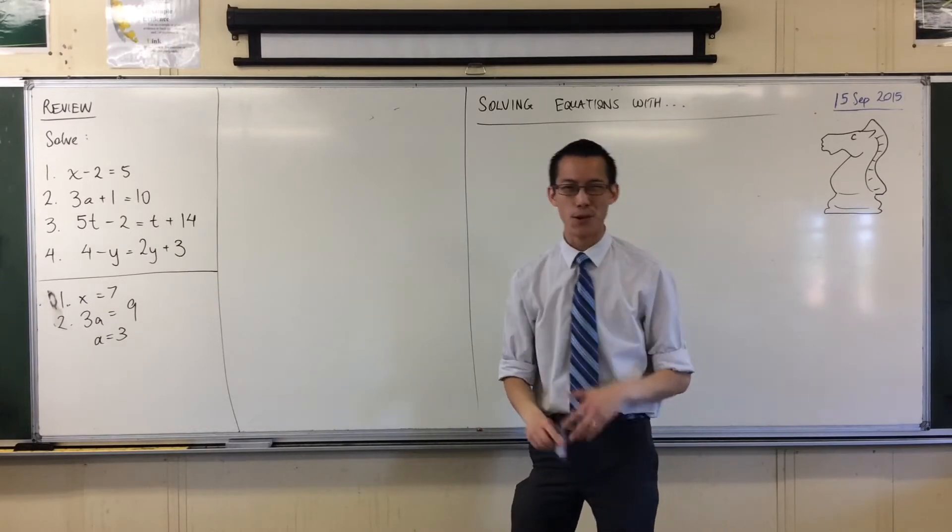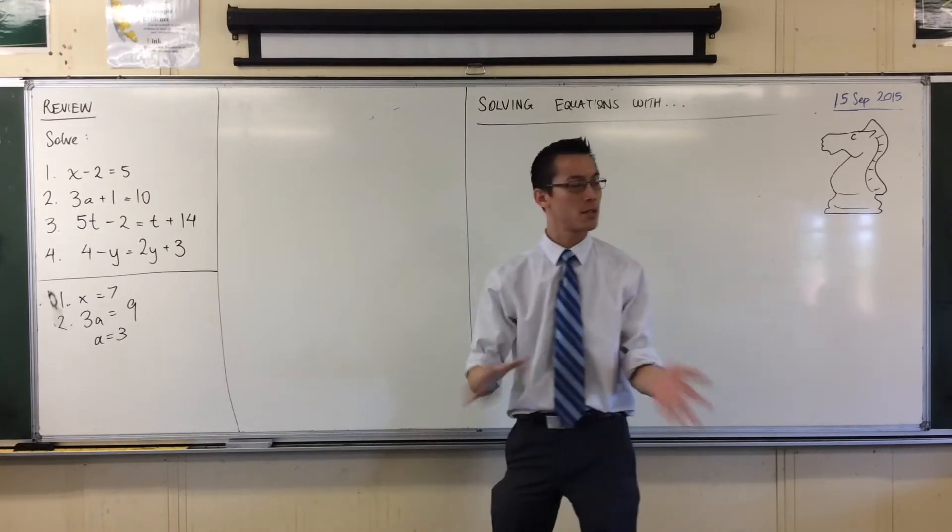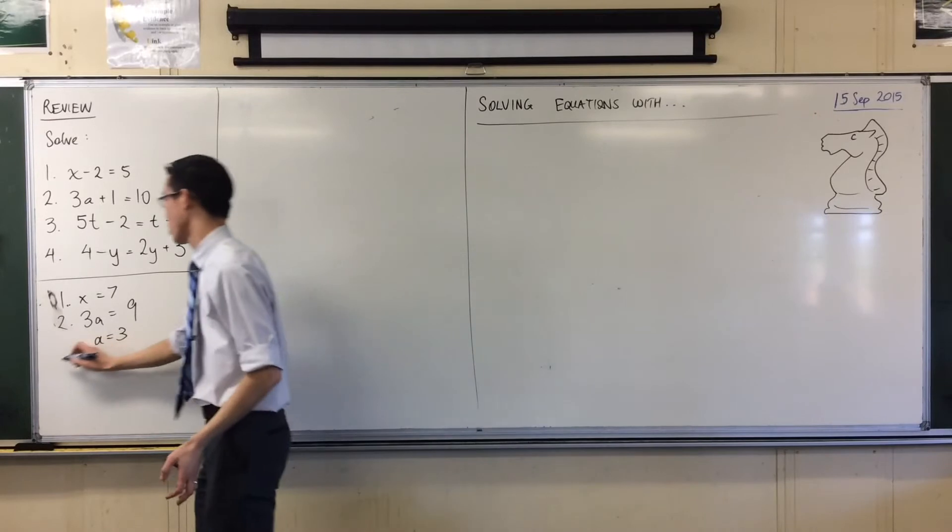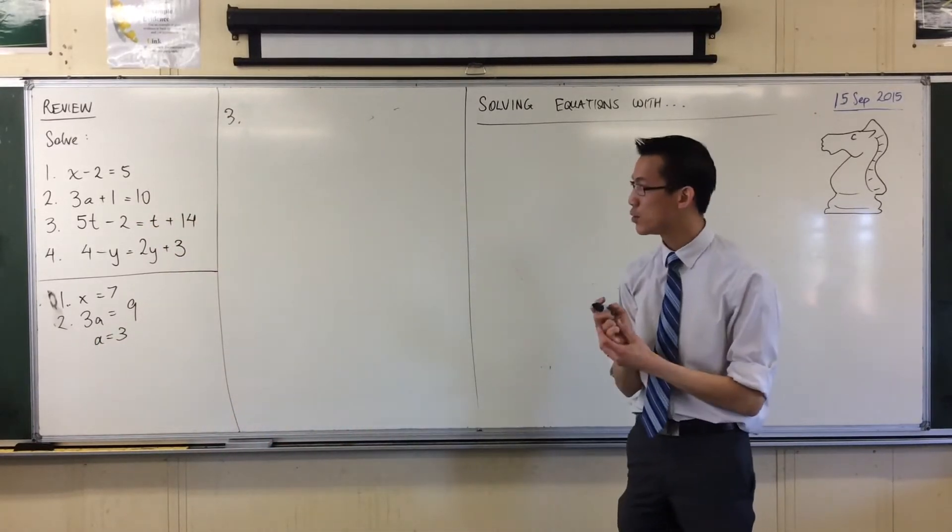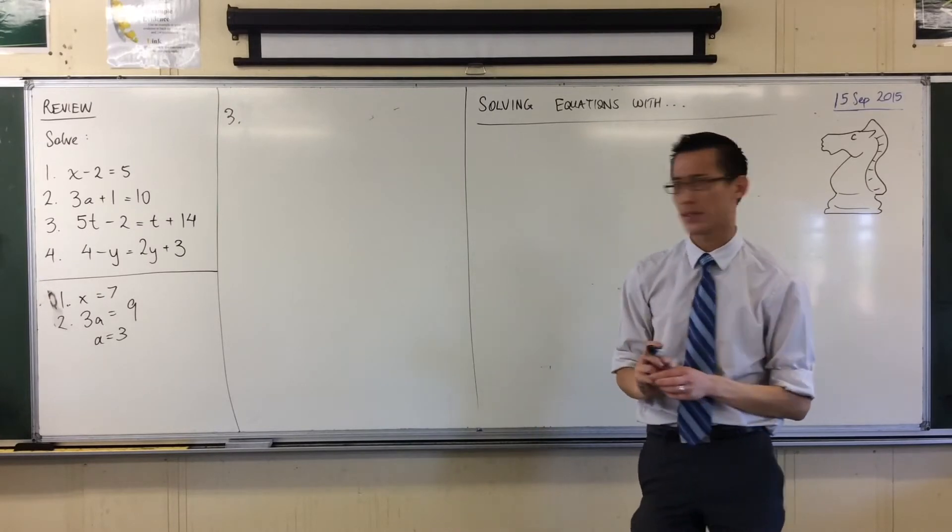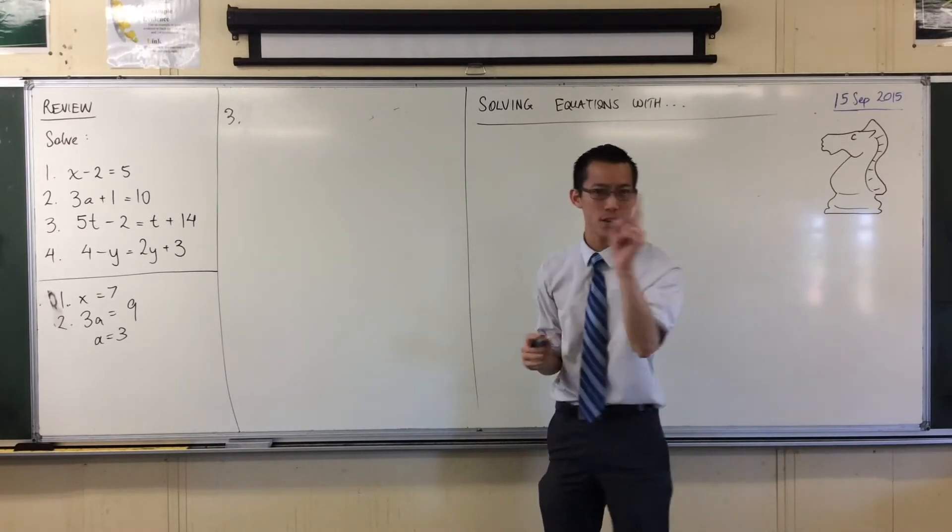All right, now we get to 3 and 4, things are really more involved. This is what we were doing just in yesterday's lesson. So I'm going to start question 3 up here. I'm going to need some room. 5T minus 2 equals T plus 14. Can someone give me a suggestion for a first line?